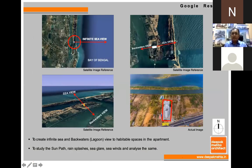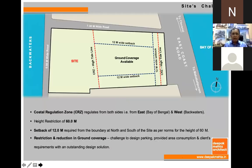Here we can see the sea view and the backwater view. The building location was amazingly good. The problem was that due to the CRZ zone, the site was narrow, and we had to leave 12 meters from the CRZ zone. At the back side also there was a CRZ high tide line. So we had to design the building within this constraint while consuming the client's FSI — it was a builder's project.